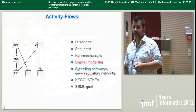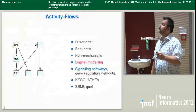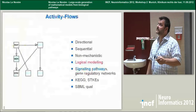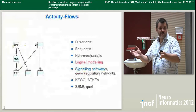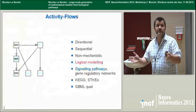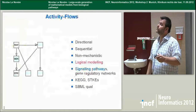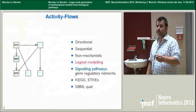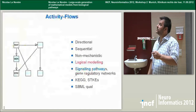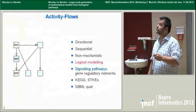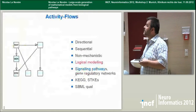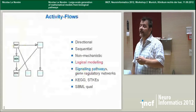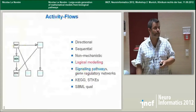The second type of diagram is an activity flow. This is directional and sequential as well, but it's non-mechanistic. When you have RAF activating MEK, you don't know exactly what RAF does to MEK — whether it stabilizes an active state, stimulates expression, or inhibits degradation. What you represent is RAF activity stimulating MEK activity in some way. It can be used to build logical models, and it's used a lot for signaling pathways — KEGG signaling pathways and STKE, for instance. We encode that in SBML qual, the package used to encode logical models.